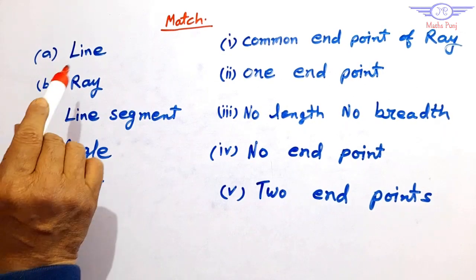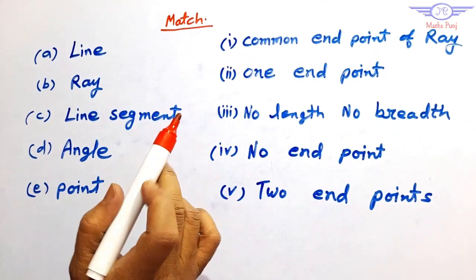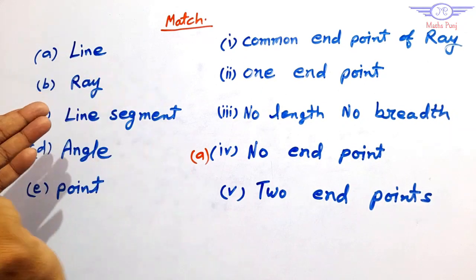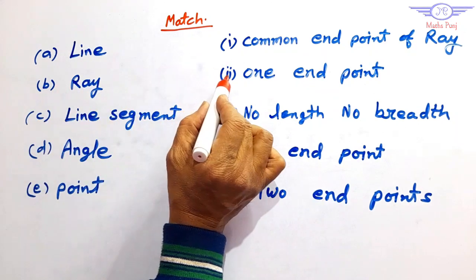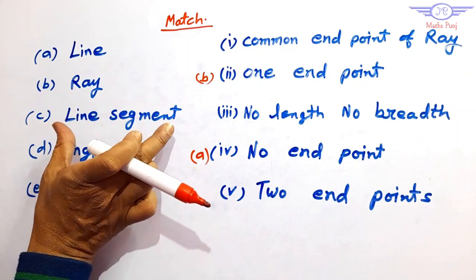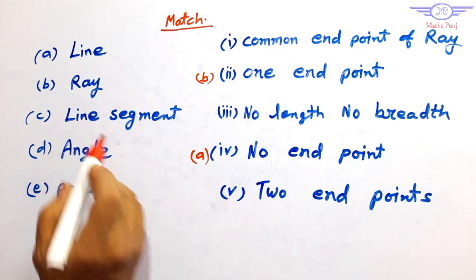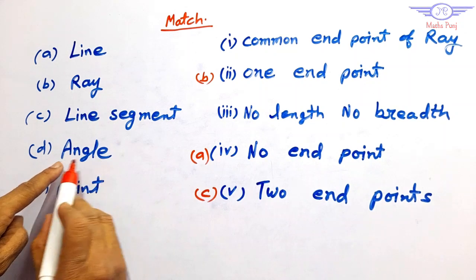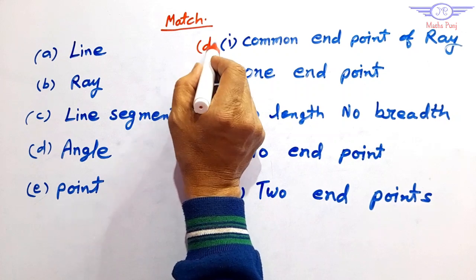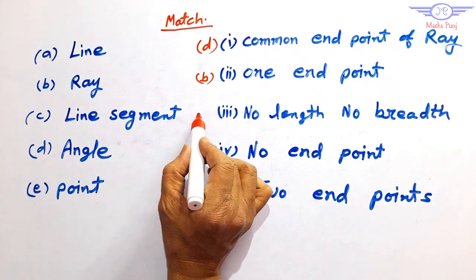Now your exercise is to match the following. What is a line? A line has no end point and an endless direction. What is a ray? A ray has one end point. What is a line segment? It has a definite measurement — it has both end points. What is an angle? An angle has a common end point of two rays. What is a point? A point has no length and no breadth.